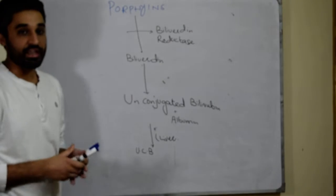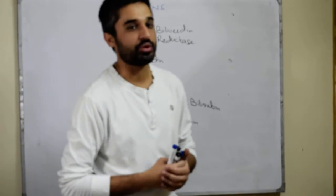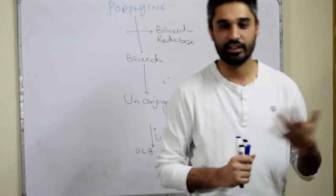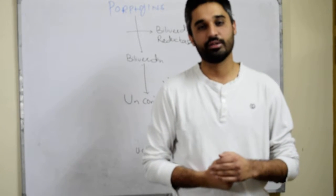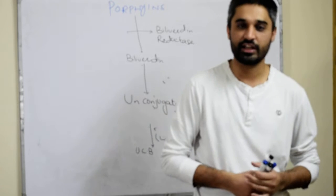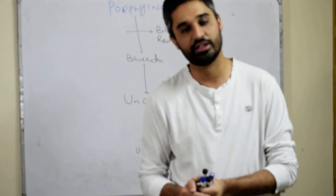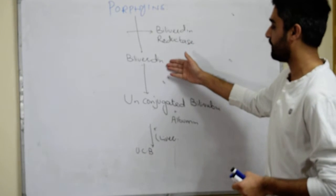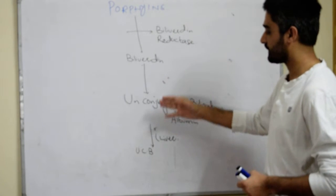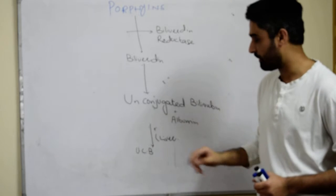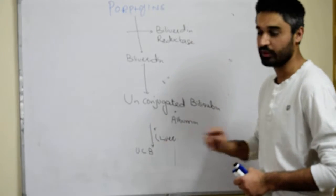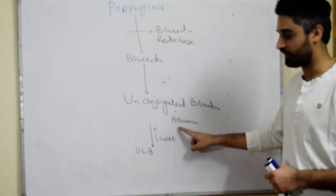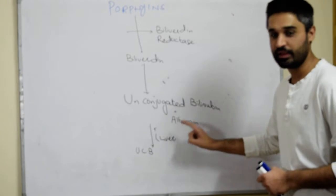To recap: the hemoglobin molecule splits into heme and globin. The heme portion splits again into iron and porphyrin. The iron is stored in the liver and different parts of the body in the form of ferritin. The porphyrin molecules convert into biliverdin, which is then converted into unconjugated bilirubin. The unconjugated bilirubin attaches to albumin and goes to the liver.